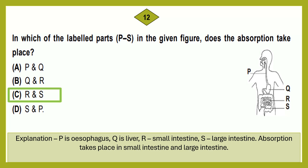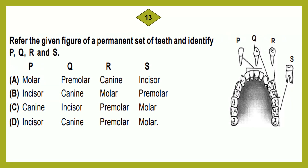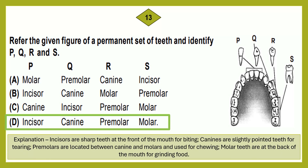Absorption takes place in the small intestine and large intestine. Question number 13: Refer to the given figure of a permanent set of teeth and identify P, Q, R, and S. The correct answer is option D: P is incisor, Q is canine, R is premolar, S is molar. Incisors are sharp teeth at the front for biting. Canines are slightly pointed teeth for tearing. Premolars are between canines and molars and used for chewing. Molars are at the back of the mouth for grinding food.